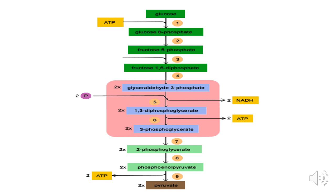To understand the importance of glucose 6-phosphate dehydrogenase in the body, let's summarize glycolysis. In glycolysis, glucose undergoes several chemical reactions to become pyruvate. The first chemical reaction involves glucose reacting with ATP in the presence of hexokinase, and one phosphate group of ATP binds to the 6-carbon of glucose, converting glucose into glucose 6-phosphate — the substrate of our enzyme, glucose 6-phosphate dehydrogenase.